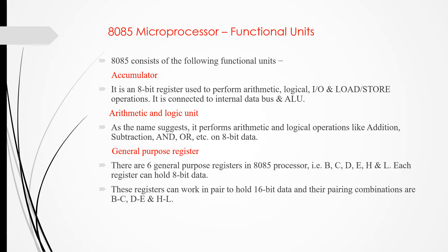There are 6 general-purpose registers in the 8085 processor: B, C, D, E, H, and L. Each register can hold 8-bit data. These registers can also work in pairs to hold 16-bit data, and their pairing combinations are BC, DE, and HL.